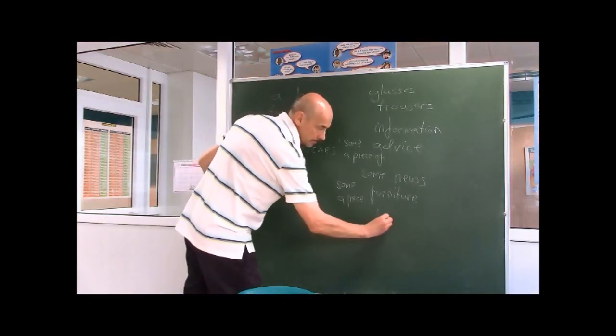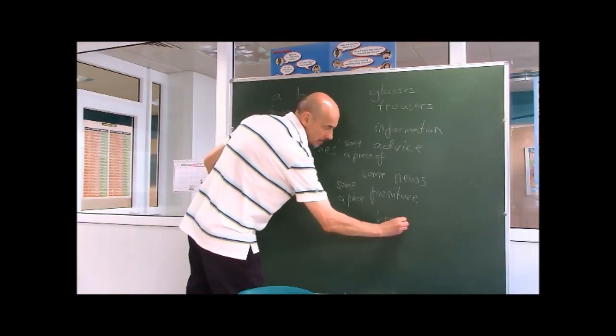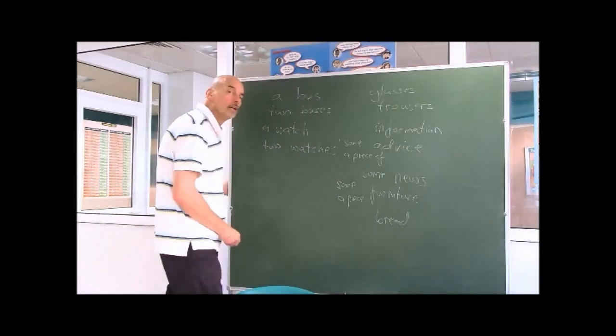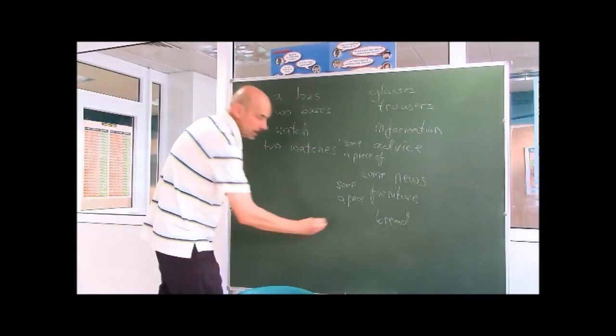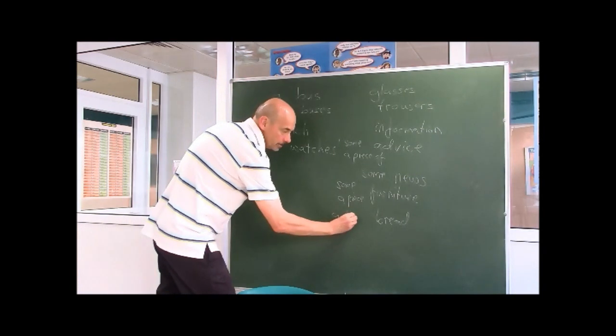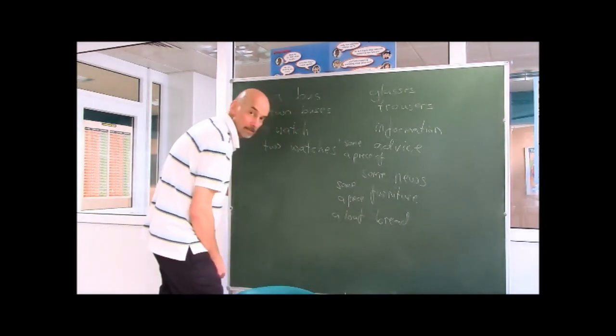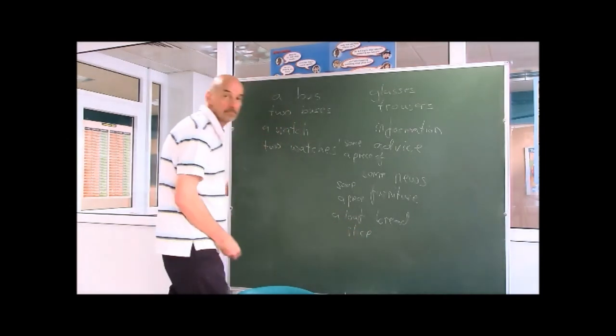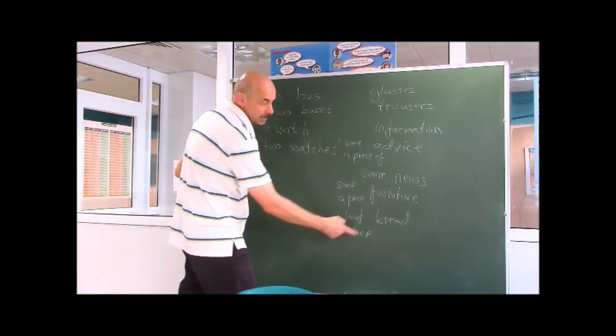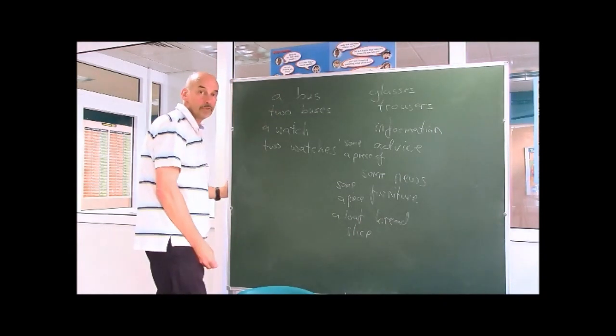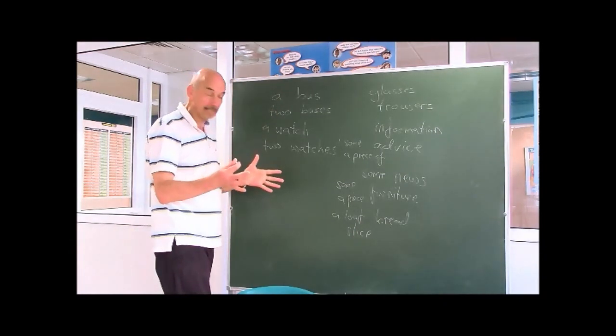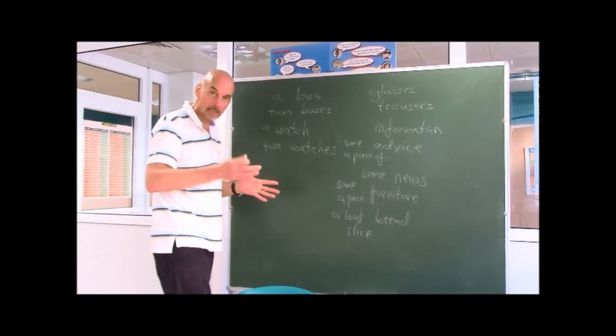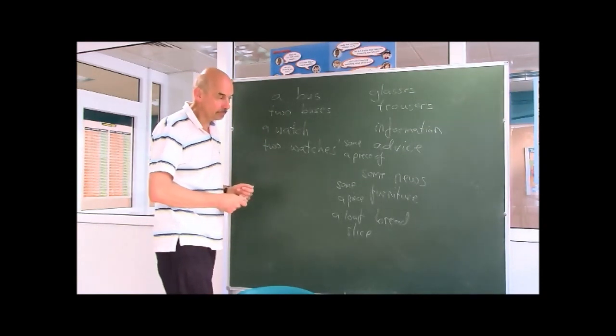Bread. Okay. How do we talk about bread? Well, you can say a loaf of bread, a slice of bread. These type of things indicate what we do with the bread. A loaf, a complete loaf, or a slice of bread. Okay? Alright.